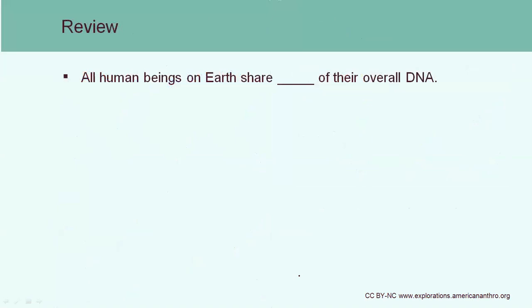Review question: all human beings on Earth share what percent of their overall DNA? It's a very high percentage — 99.9% of our DNA is the same. You might recall chimpanzees and humans are 98% the same. Those small mutations and differences add up to create the observable differences we see.